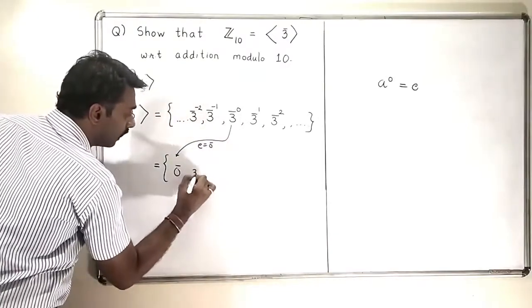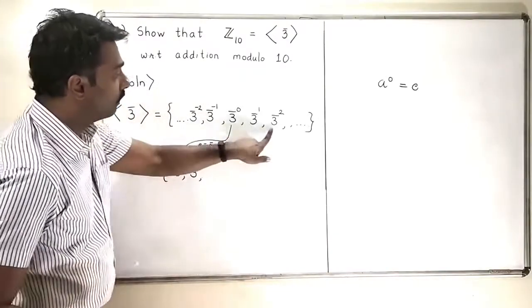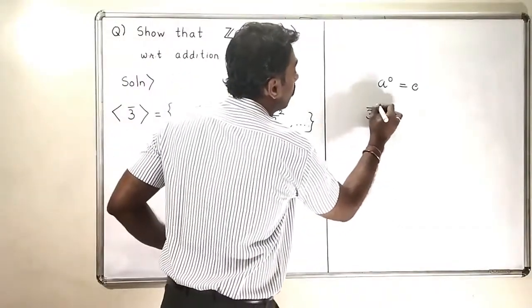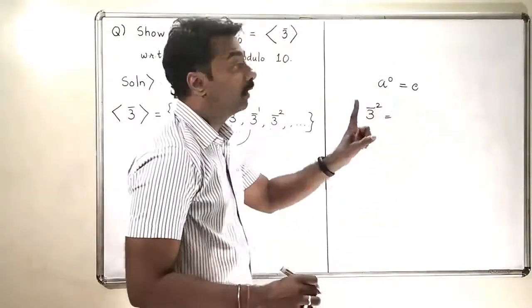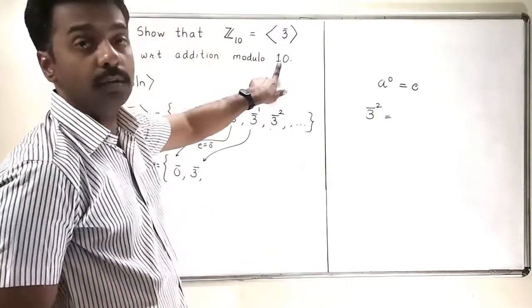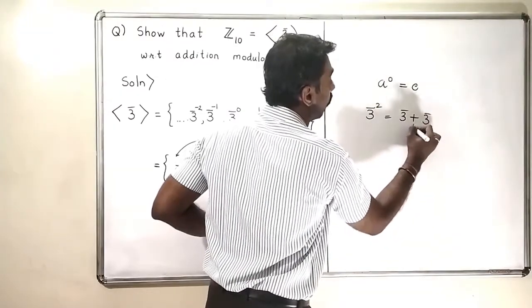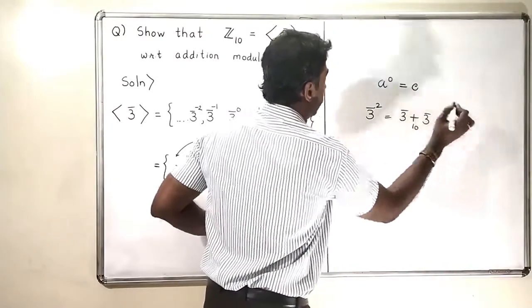3 bar raised to 1 bar is 3 bar. What is 3 bar square? 3 bar square means it is not 9 bar. Remember the operation is addition modulo 10. So 3 bar square is 3 bar plus 3 bar modulo 10, which is 6 bar.